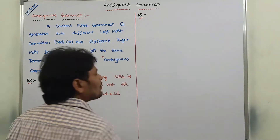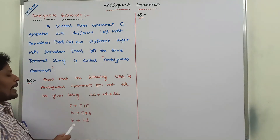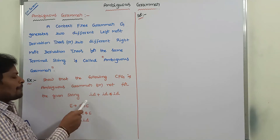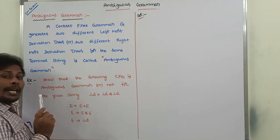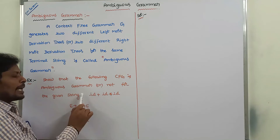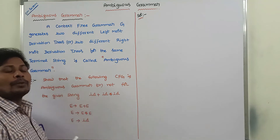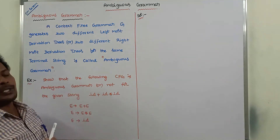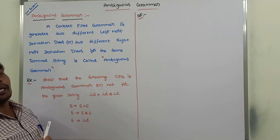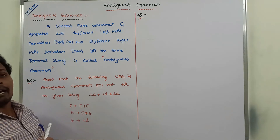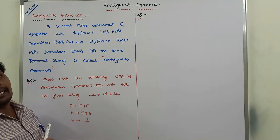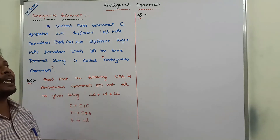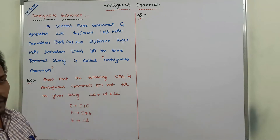First of all, suppose I am taking one context-free grammar. If this grammar generates the same terminal string by using two different leftmost derivation trees or two different rightmost derivation trees, then that grammar is called as ambiguous grammar.